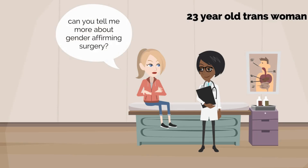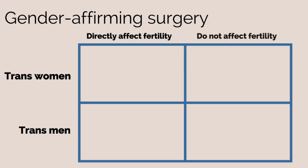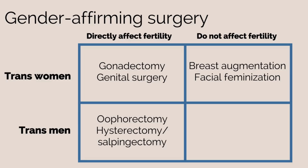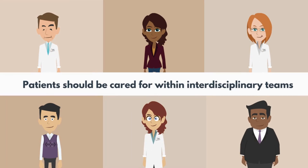She would like to discuss the option of gender-affirming surgery. Trans women and trans men may be interested in gender-affirming surgery. It is important to note that surgery is not necessarily the endpoint for many trans people that transition. Surgical techniques have improved dramatically in the past 10 years, and the type of surgery falls into two main categories: those that directly affect fertility and those that do not. For trans women, surgery includes gonadectomy, genital surgery, breast augmentation, and/or facial feminization surgery. For trans men, surgery includes oophorectomy, hysterectomy, salpingectomy, genital surgery, and mastectomy. It is important that patients are cared for within interdisciplinary teams that include reproductive endocrinologists, psychiatrists and psychologists, primary care physicians, plastic surgeons, urologists, and gynecologic surgeons.